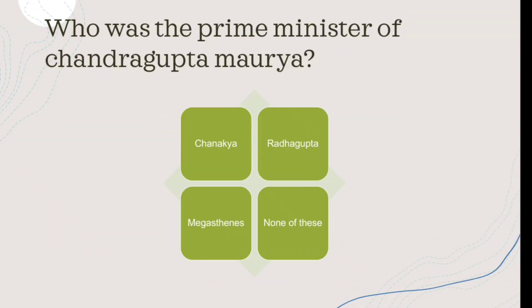Next question: Who was the Prime Minister of Chandragupta Maurya? The right answer is Chanakya (Kautilya).